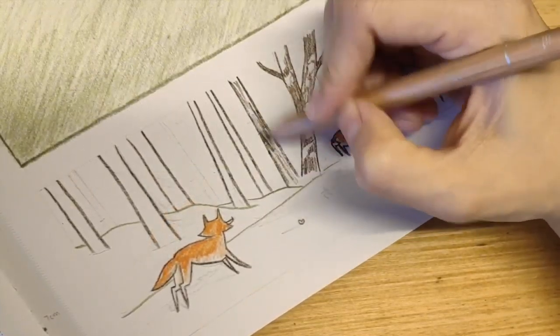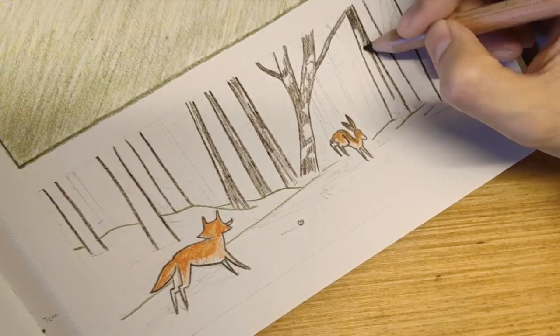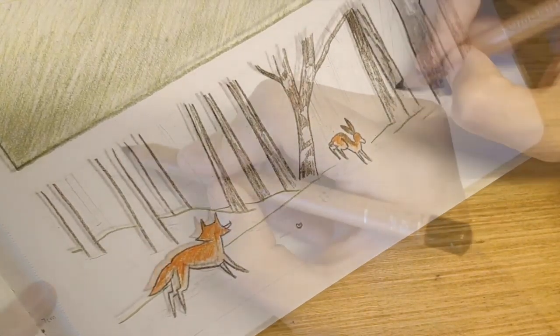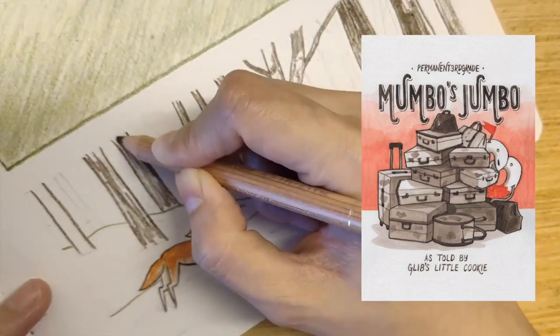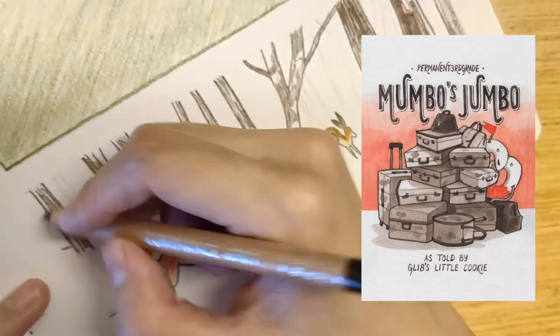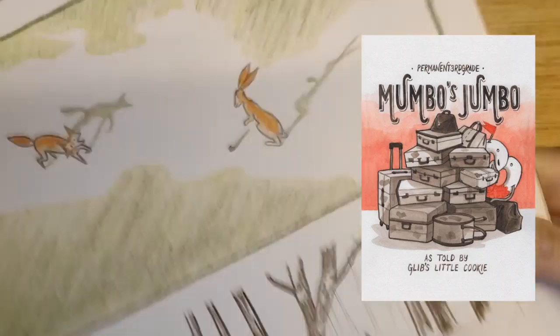Now the third thing that motivates me to create a comic book is it gives me a reason to try out a new medium. In my first comic book, Mumbo's Jumbo, I used watercolor for the first time. I used two colors, and I used them straight off the tube. No color mixing.